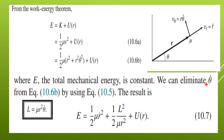We can eliminate theta-dot from this equation by using the relation for angular momentum: L = mu r² theta-dot, so r² theta-dot = L/mu. On substituting, the energy equation becomes E = half mu r-dot² + half L²/(mu r²) + u(r). This equation describes a particle moving in one dimension — there is no presence of theta in this equation.